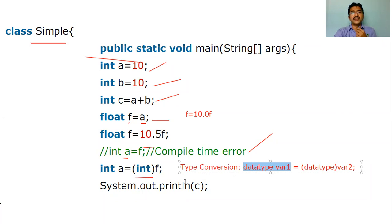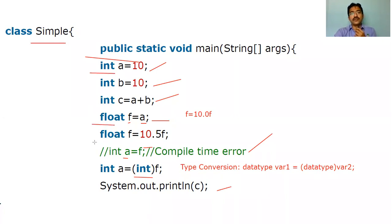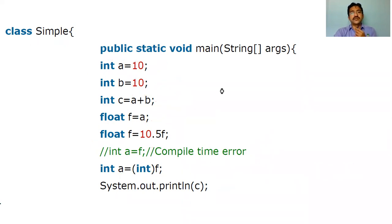We'll discuss type conversion in detail in the next topic. In the last statement, we are displaying the value of c. In this example, we have seen how to initialize int, how to initialize float, how to assign a float value, how to assign an integer value to a float, and how to assign a float value by type conversion to an integer. The output of this program is 20, because c = a + b, where a = 10 and b = 10, so 10 + 10 = 20.